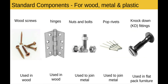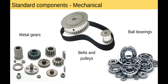Standard components for wood, metal and plastic. For wood, we've got wood screws, obviously available in all kinds of sizes and materials. Hinges would be a standard component available in different sizes. Nuts and bolts are used to join metal. Pop rivets are used to join metal, and knockdown fittings — the type used in flat pack furniture. For mechanical standard components, we have the sintered metal gears we looked at earlier, belts and pulleys, and ball bearings. These are all mechanical components that manufacturers would buy in from other manufacturers rather than making themselves.